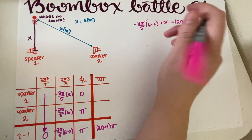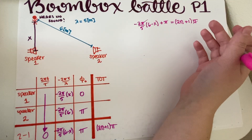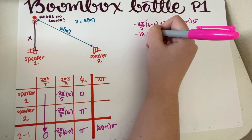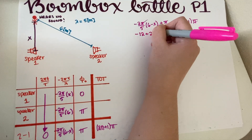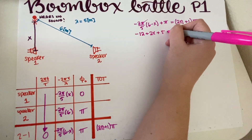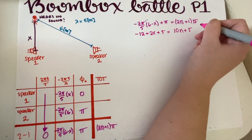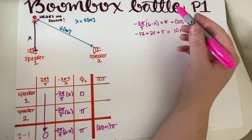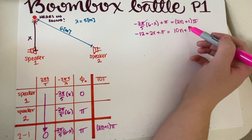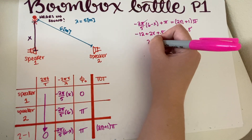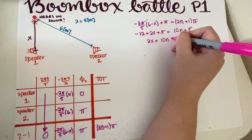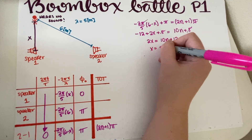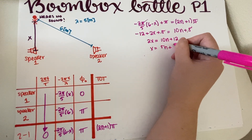Now it's just algebra. Multiplying through, we get negative 12 plus 2X plus 5 equals 10n plus 5. The fives cancel, leaving 2X equals 10n plus 12, so X equals 5n plus 6.